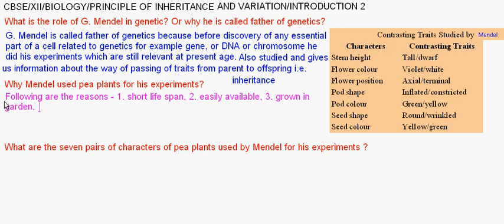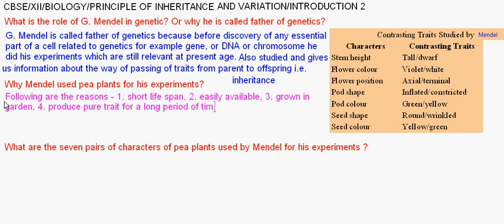Pea plants show homozygous traits, or pure traits, and produced pure traits for a long period of time. Additionally, a wide variety of alleles are available, which helped Mendel in his study.